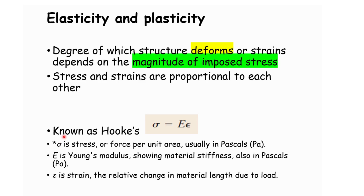Here, sigma is stress — force per unit area — and E is Young's modulus, showing the material stiffness. Epsilon is strain, the relative change in material length due to loading. This relationship is true for materials that obey Hooke's law within their elastic limit.